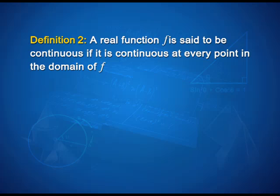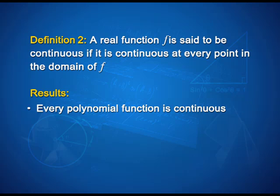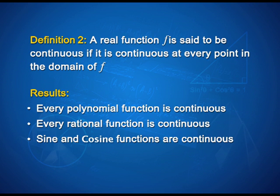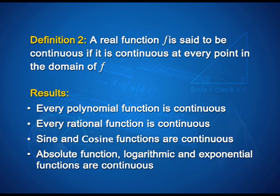A function will be continuous if it is continuous at every point of its domain. This and our next list of results which tell us what are those standard functions which are always continuous is going to help you build up on the further concepts that you are going to come across in this chapter. We have results which suggest that every polynomial function is continuous, every rational function is continuous, sine and cosine functions are continuous, absolute, logarithmic and exponential functions are continuous. These are results which are not too difficult to prove, but for the time being we are not covering their proofs, but we will be using and referring to these results in our future lessons.